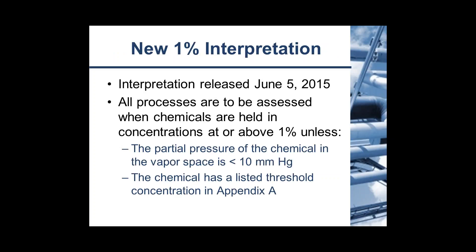This was also an attempt to align OSHA's regulations with the way the EPA looks at chemicals — they had already started using the 1% interpretation with the EPA, so now OSHA is using it as well. All processes will be assessed when a chemical is held at a concentration at or above 1%. There are a couple of exceptions: if the partial pressure of the chemical in the vapor space is less than 10 millimeters of mercury, you would not have to follow this. Also, 11 of the chemicals have a listed threshold concentration, and that would supersede the 1% rule.